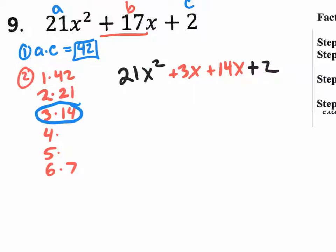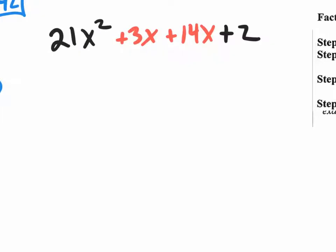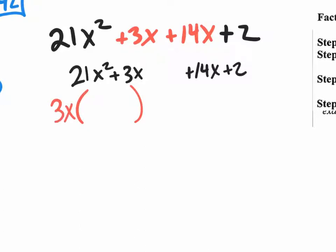That way you can now factor by grouping. So when I factor by grouping, step one is to create two groups. Step two is to factor something out of the first group which in this case is a 3 and an x.